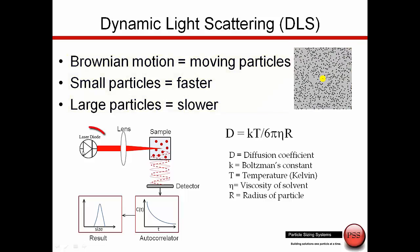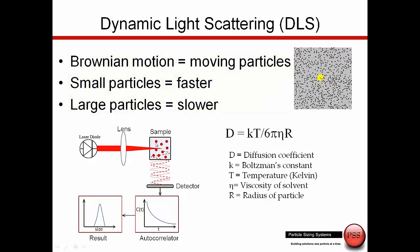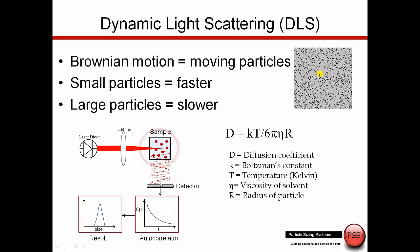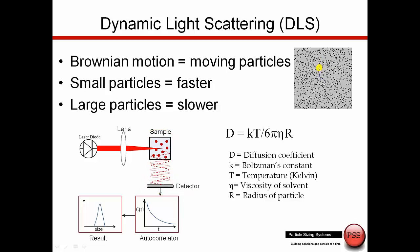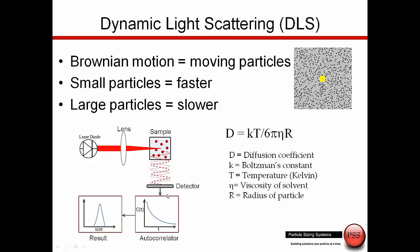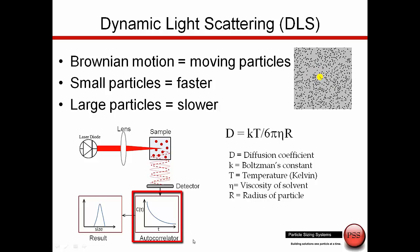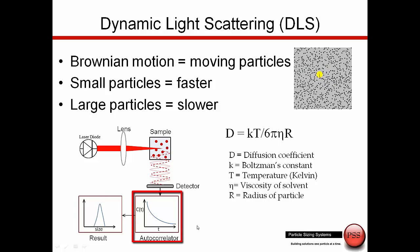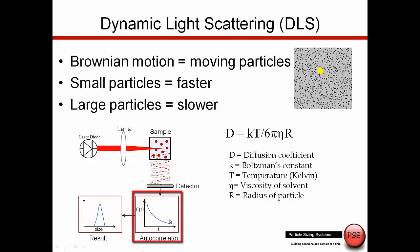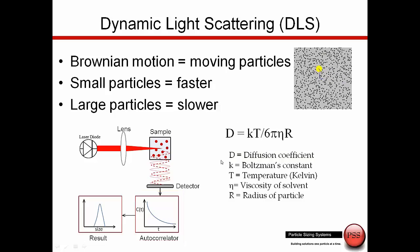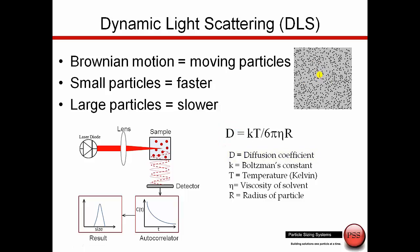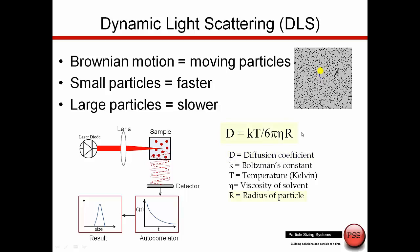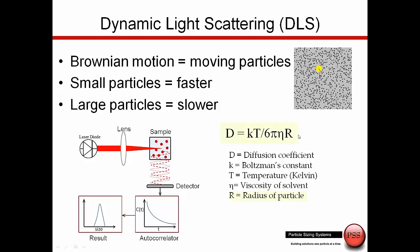With dynamic light scattering, we have a light source, the sample sits in a cuvette, and we have a detector. We look at the light scattering due to the Brownian motion of the particle. This creates a correlation function. From the correlation function, we extract the translational diffusion coefficient D, and then use the Stokes-Einstein equation to calculate our radius.